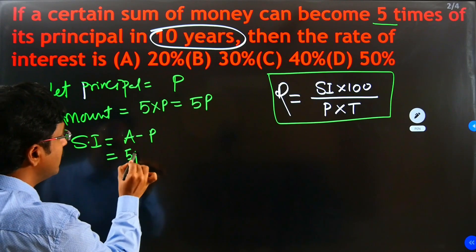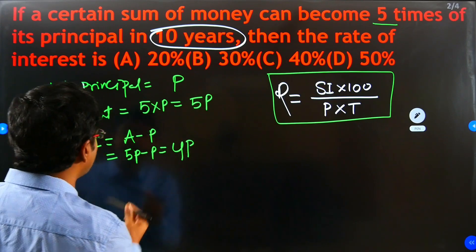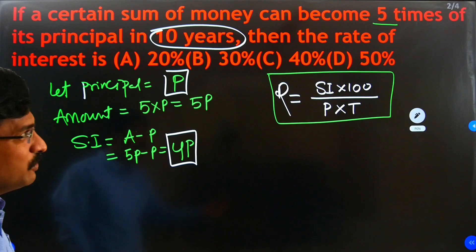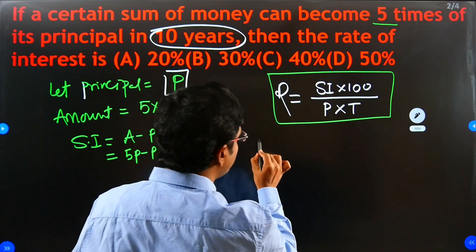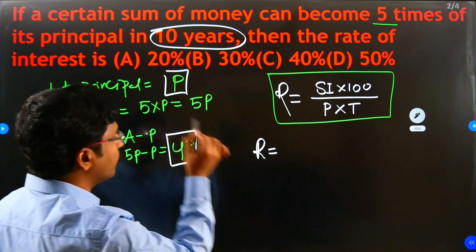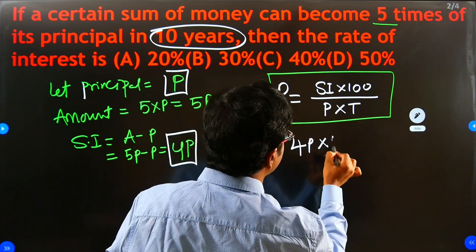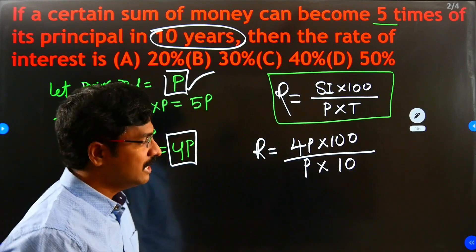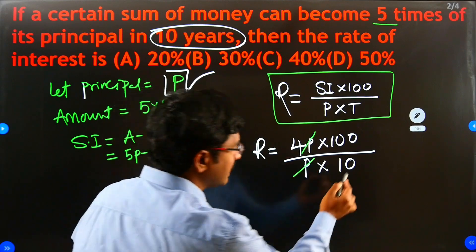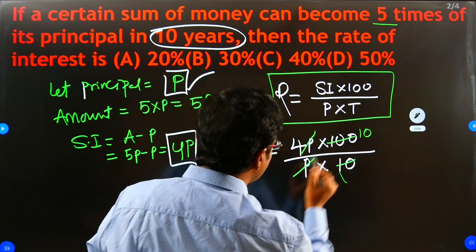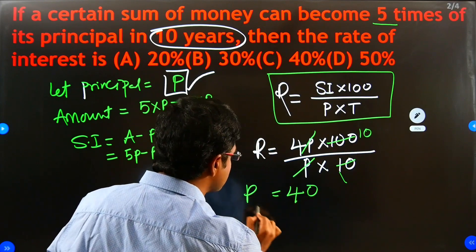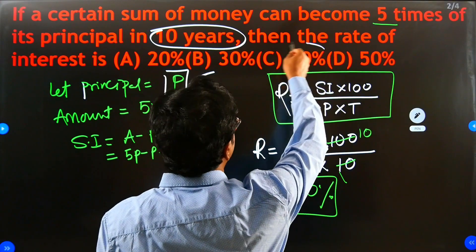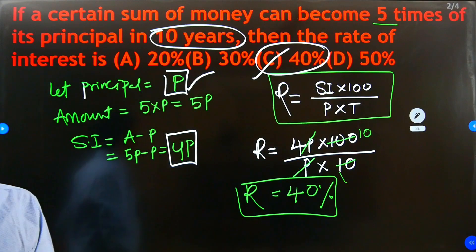Now we have SI = 4P and Principal = P, so we can apply these values in the formula: R = (4P × 100) / (P × 10). Here P and P cancel out: R = 4 × 100 / 10 = 4 × 10 = 40. So the rate of interest is 40%. Looking at the options, option C — 40% — is the correct answer.